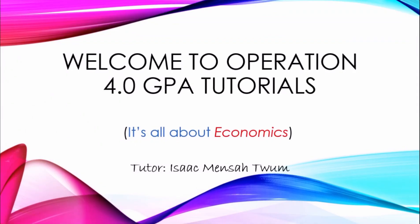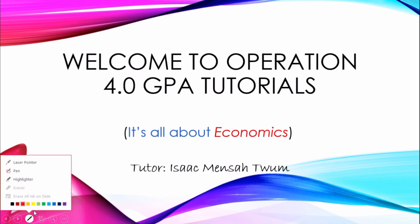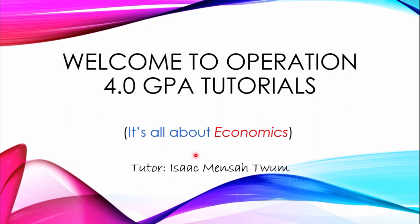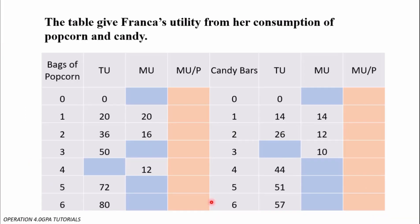Hello and welcome to Operation 4.0 GPA Tutorials. It's all about economics today. We are going to dive deep into a question on consumer behavior. Consumer behavior is about utility — that is, the satisfaction we derive as we consume goods and services. We are also constrained by our income and the prices of the goods we want to buy, and therefore we make rational decisions in order to maximize our satisfaction.